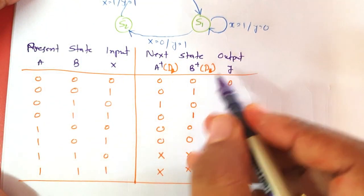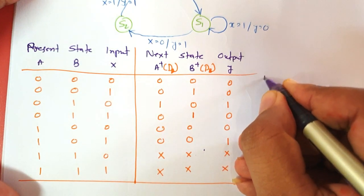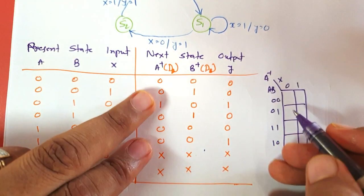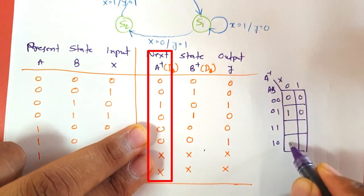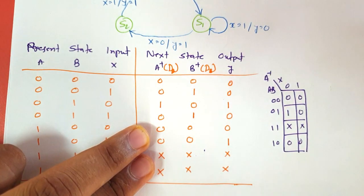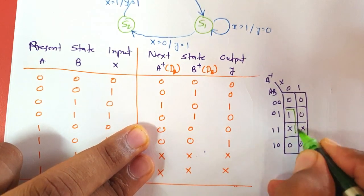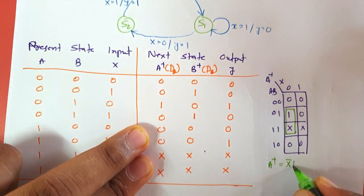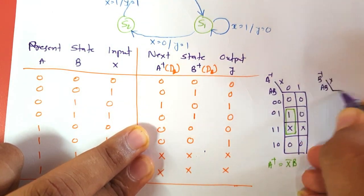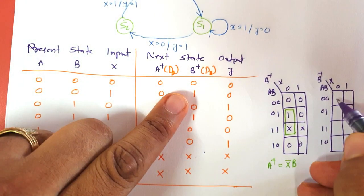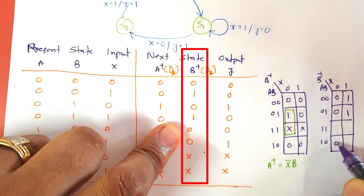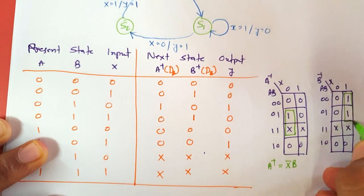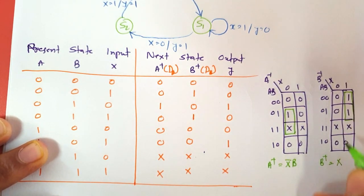Now we solve for A+, B+, and Y using Karnaugh maps with inputs A, B, and X. For A+: placing the values and grouping, we get A+ = X̄B. For B+: placing the values and grouping, we get B+ = XĀ. For Y: placing the values and grouping, we get Y = BX̄ + XA.